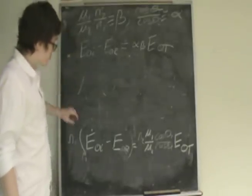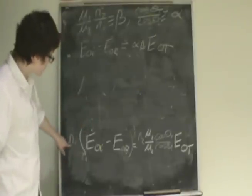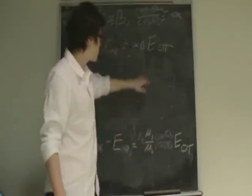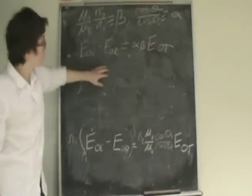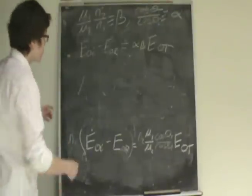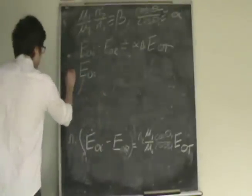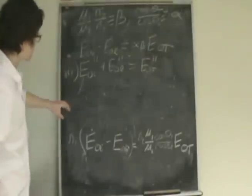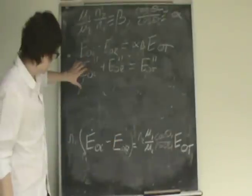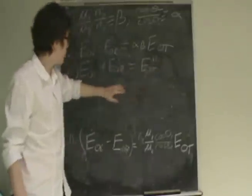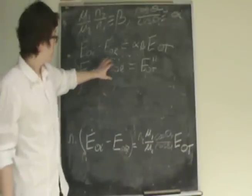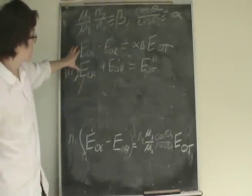Now we use the definitions to change our previous equations. I changed the velocities for the indices of refraction N1 and N2 in order to use the definition of beta. Using the cosine of the transmitted term and the cosine of the incident term, we have alpha, arriving at a new equation. Now we use the relation of the parallel components of the electric field — equation 3 — where the perpendicular components are equal to zero, so we are just dealing with the parallel components. With this set of equations, we can either add them, which eliminates the reflective term, or subtract them, which eliminates the incident term.